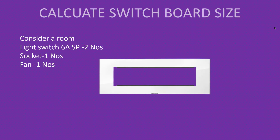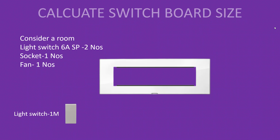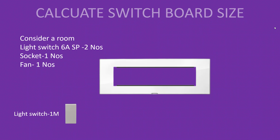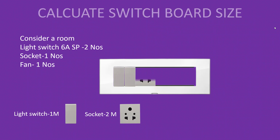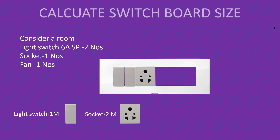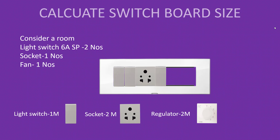Let's learn to calculate the size of a switchboard. Consider a room that has two light switches, one socket, and one fan. Light switches are one module each, so two module spaces will be occupied. The socket is two module, so two module spaces will be occupied. The socket also needs a switch to control it, so one additional module. The fan regulator is either one or two module — for a safe calculation, I am considering two module, so two module spaces will be occupied by the fan regulator.